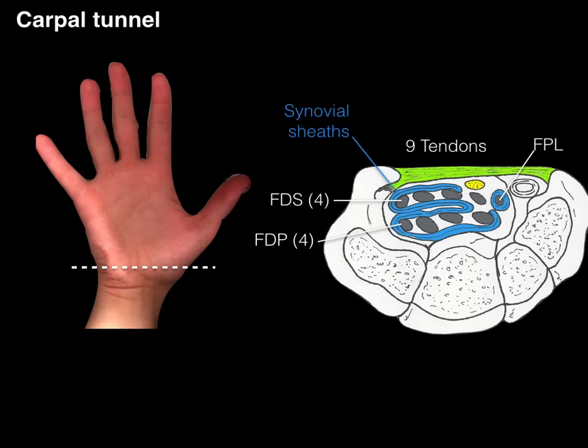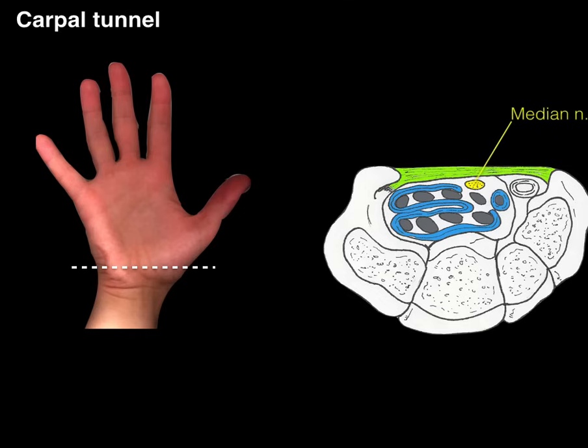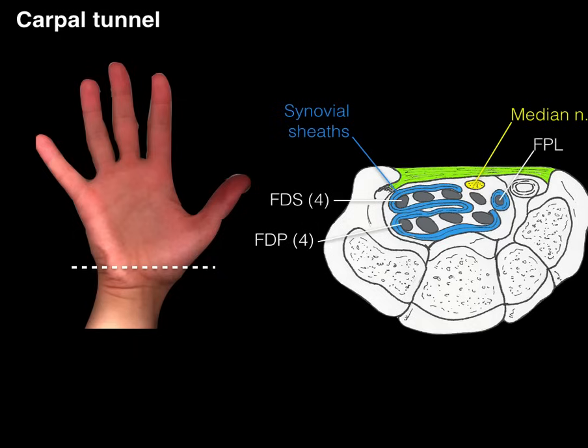Also within the carpal tunnel is the synovial sheath shown in blue, which wraps around the tendons and lubricates them as they move back and forth — you can see these tendons moving when you flex your fingers. If the tendons become inflamed, they can cause pressure to build up. The full contents of the carpal tunnel are therefore nine tendons, the median nerve, and the synovial sheaths.